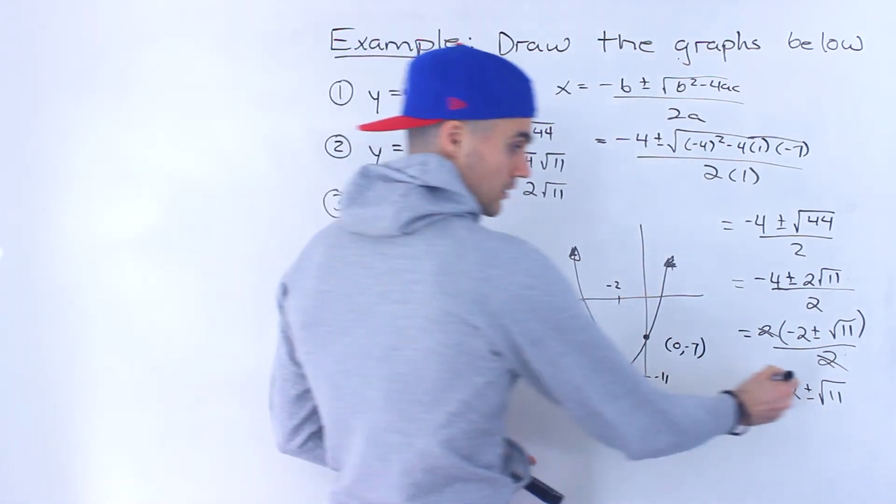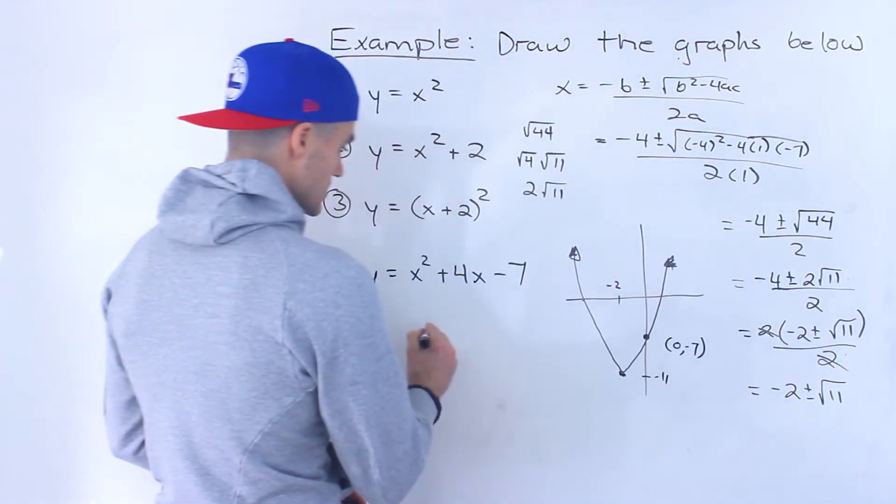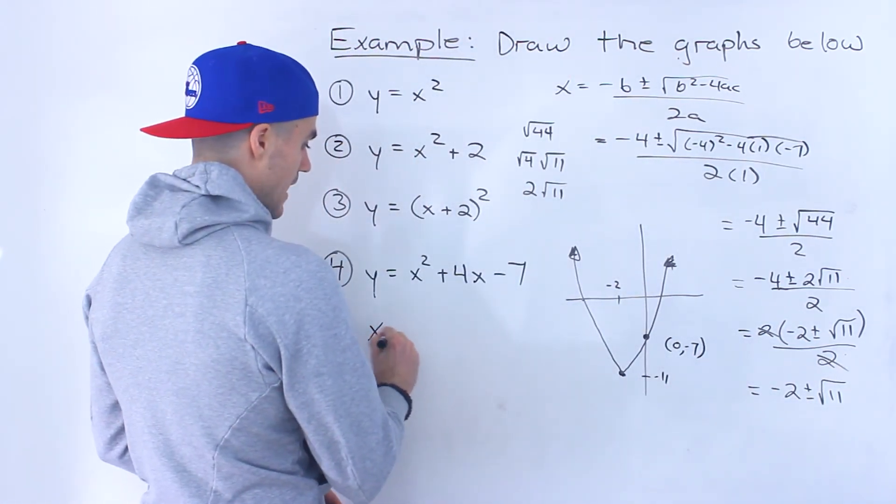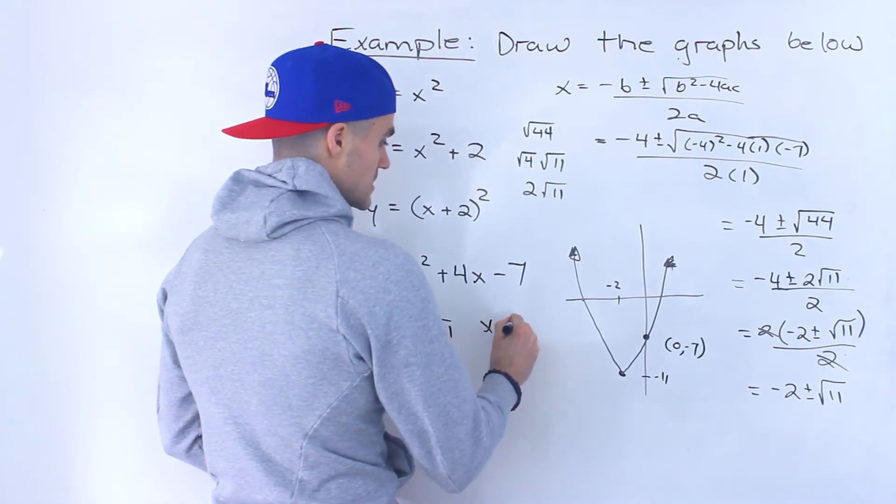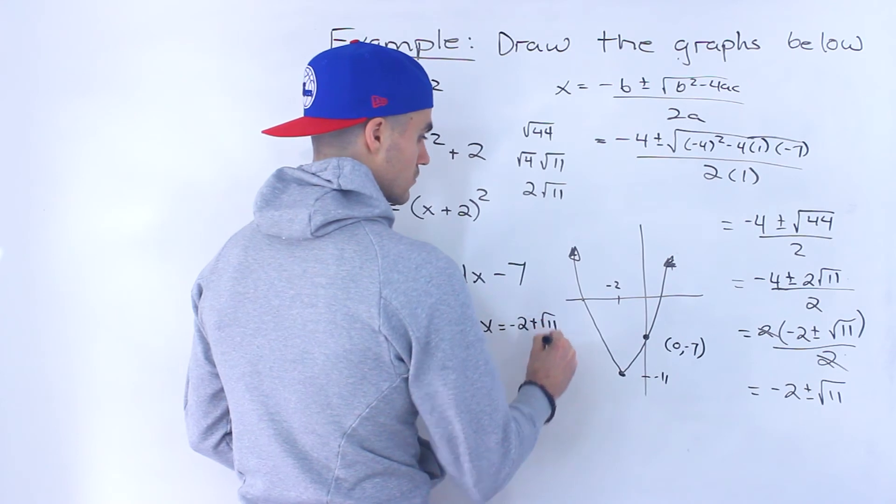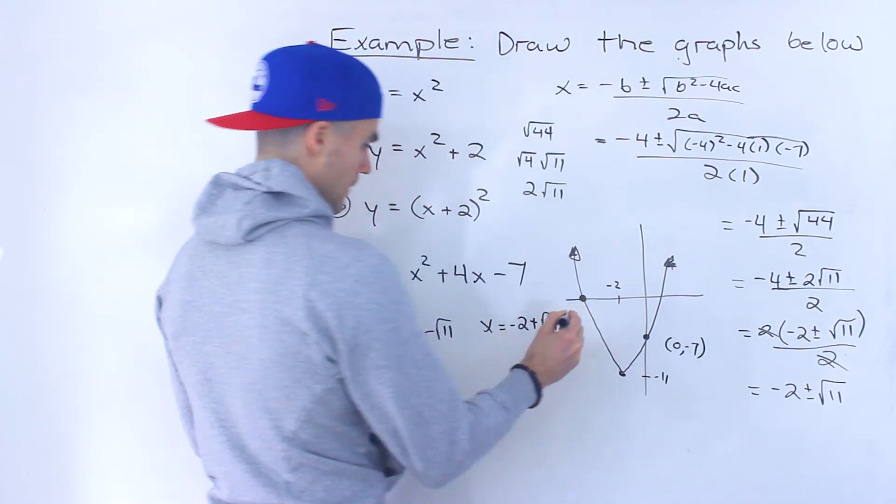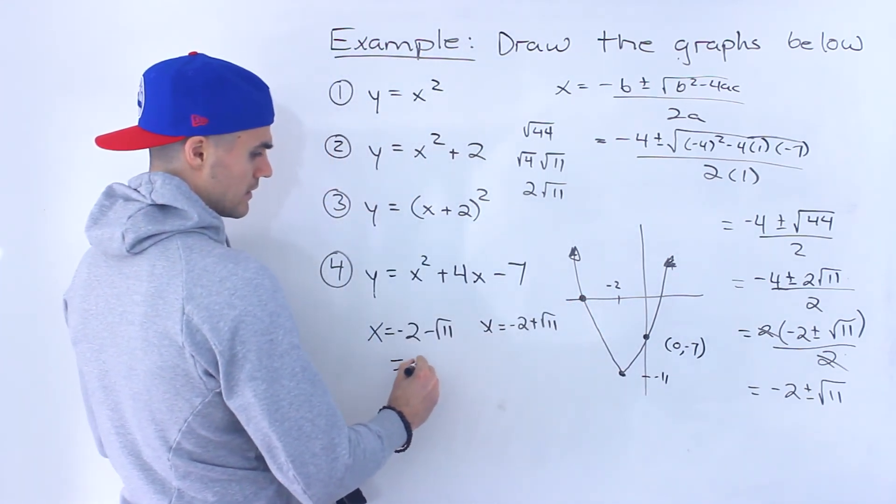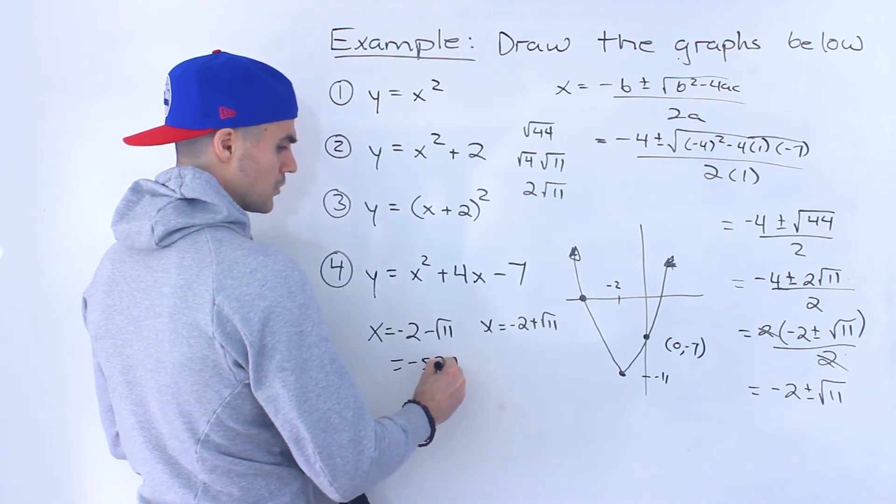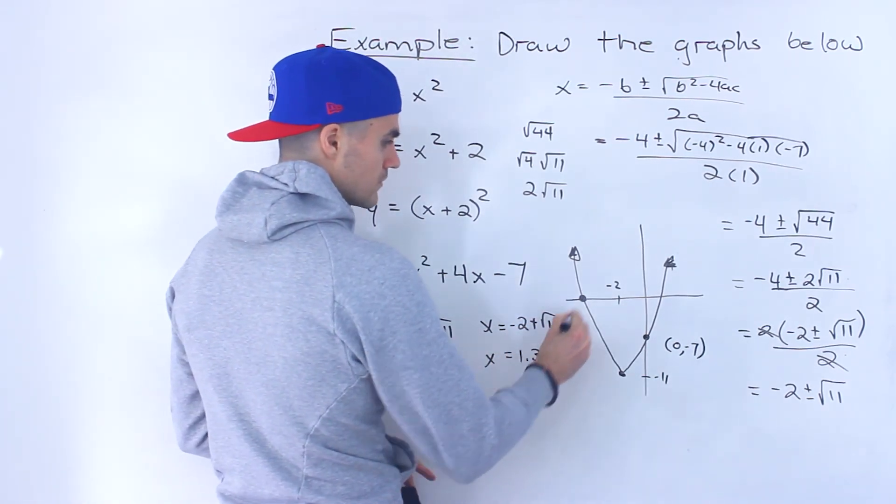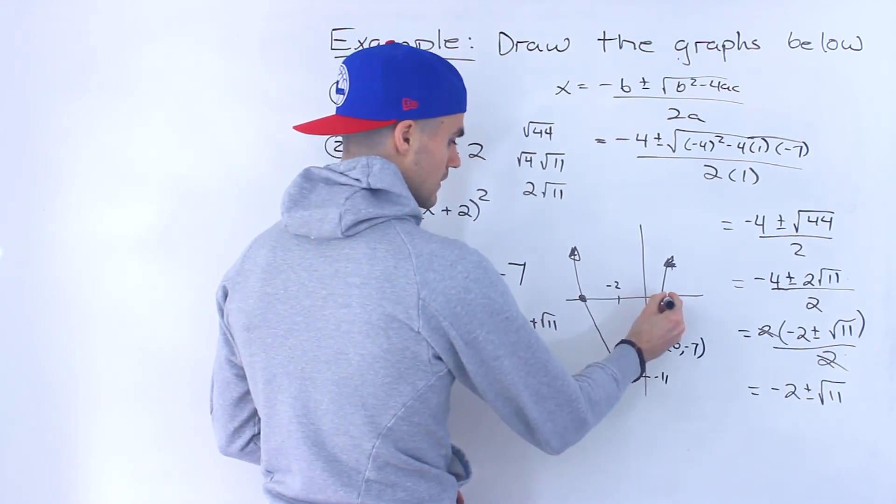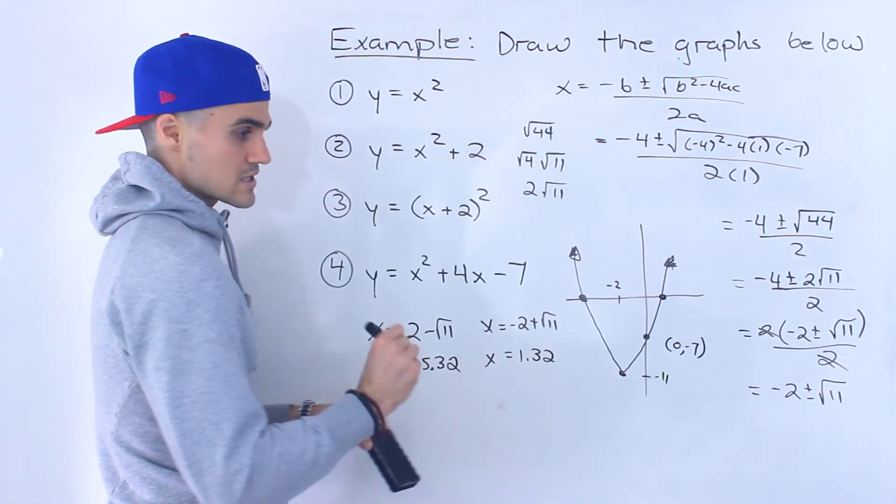But right here, notice these are two values. So 2 x-intercepts, x equals negative 2 minus root 11, and then x equals negative 2 plus root 11. So this would be negative 2 minus root 11. And if you do this in your calculator, it'd be approximately negative 5.32, this would be approximately 1.32. Negative 5.32, and then this would be positive 1.32.